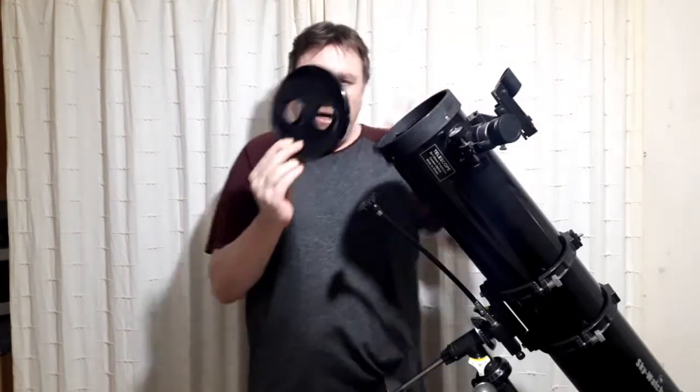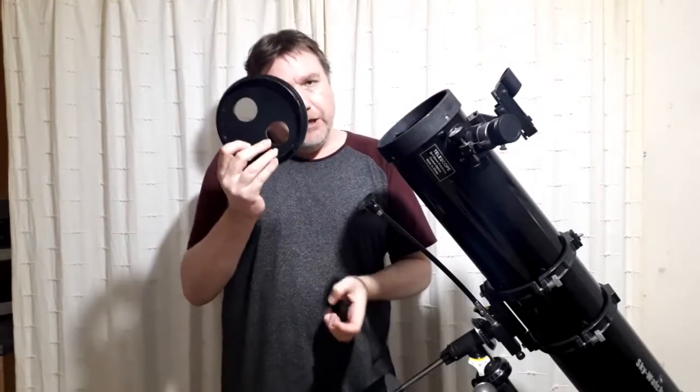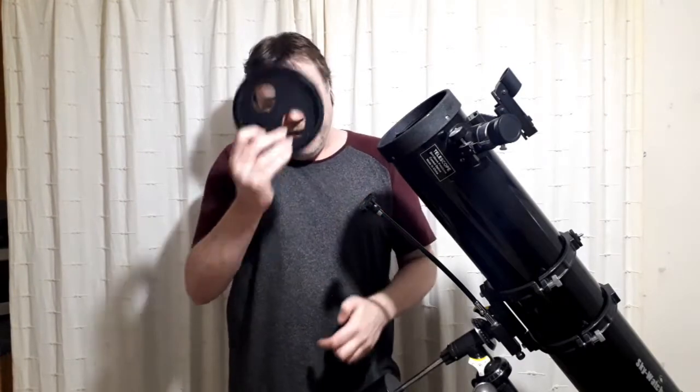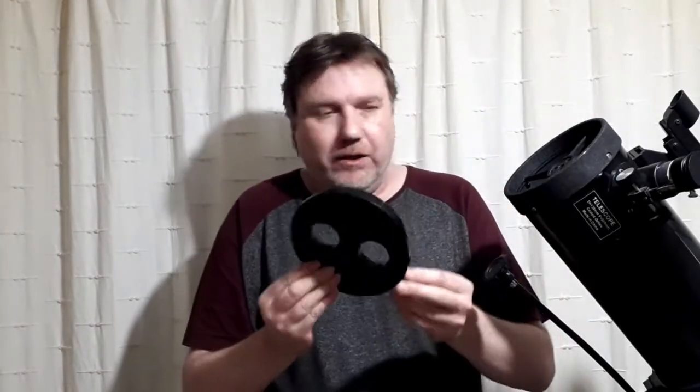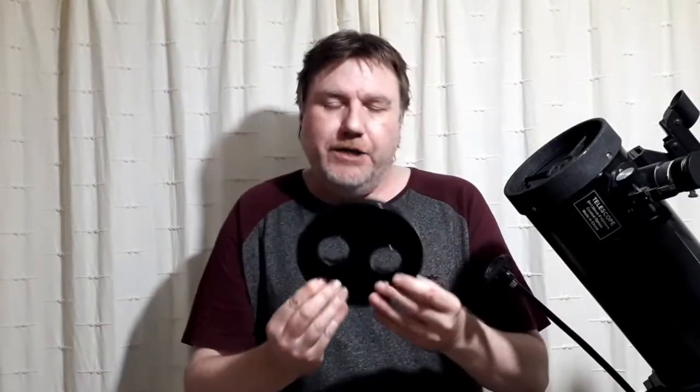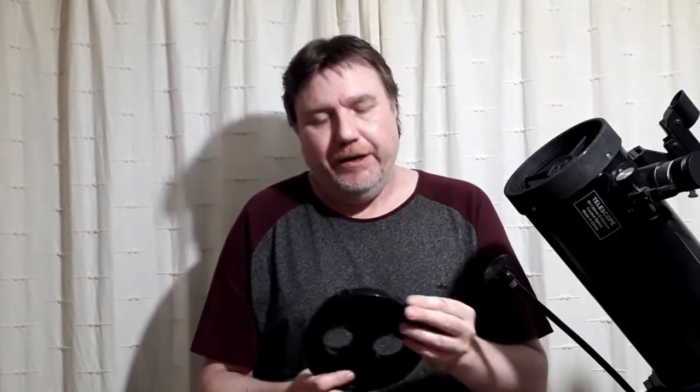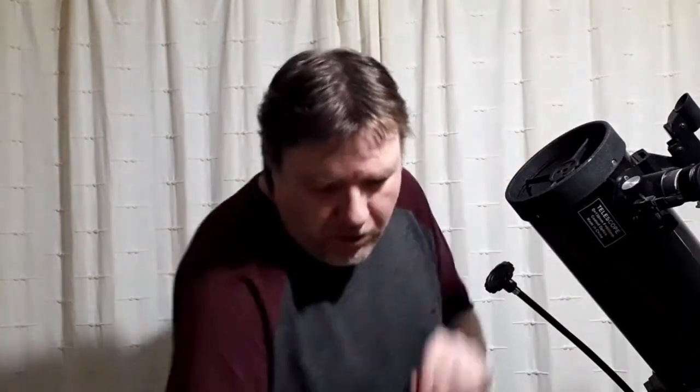But if you've got a mask that you can adapt like this, then all the better. The way this works is imagine this is on your telescope. You place it on and you get your object. We'll say for example Saturn. We've got a planet in our target as our target.